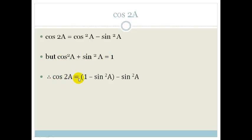So therefore cos 2A is equal to, instead of cos²A, we write 1 minus sin²A minus sin²A, which then becomes 1 minus 2 sin²A.